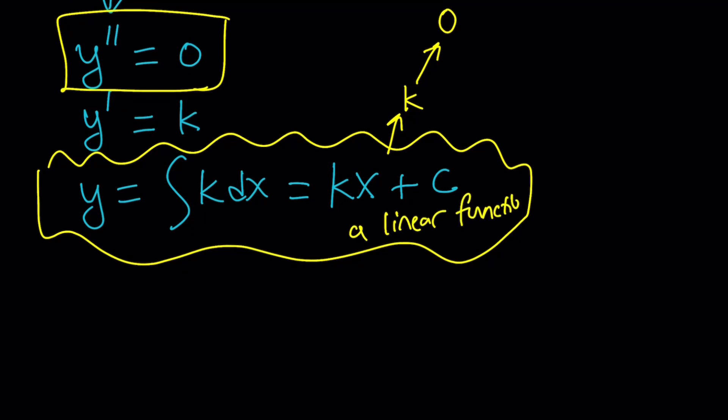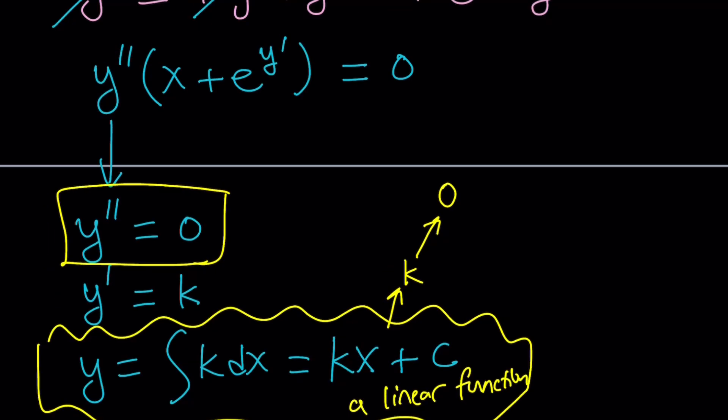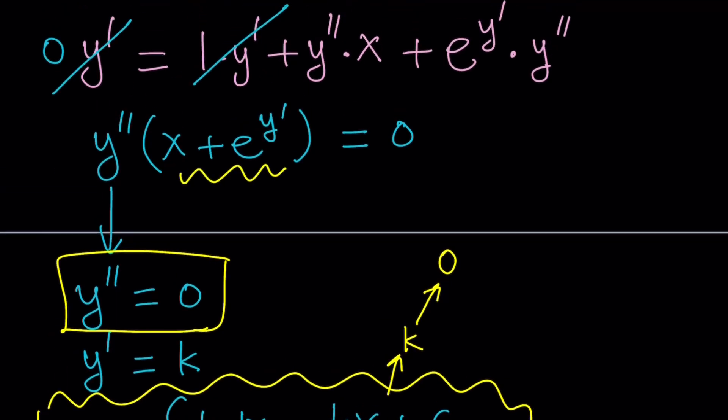So a linear function is a solution. Right? Since we don't have any initial values or initial conditions, basically k and c are arbitrary constants. Make sense? I mean, k can even be zero so that a constant will also satisfy this equation. You can always plug it in and test it out. Let's go ahead and take a look at the other solution, which is actually a little bit more interesting.